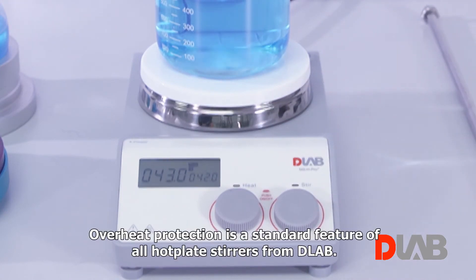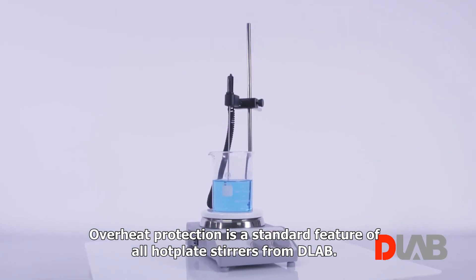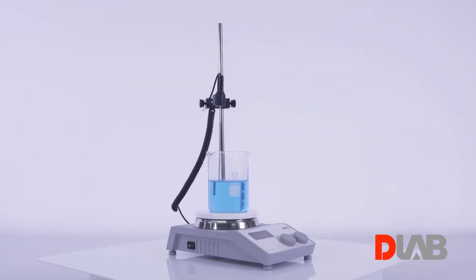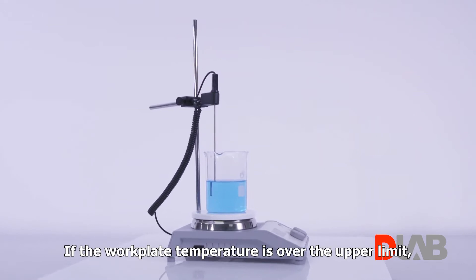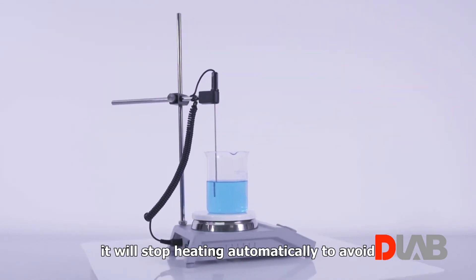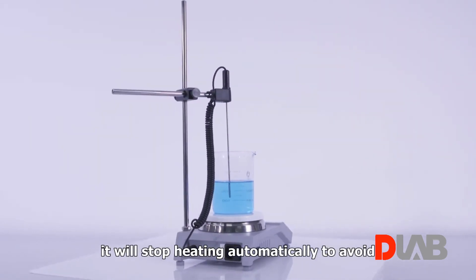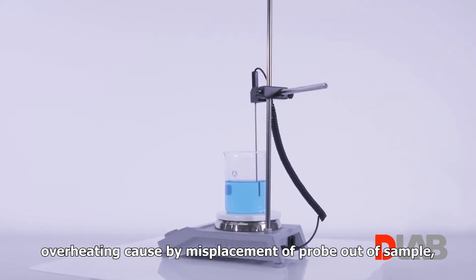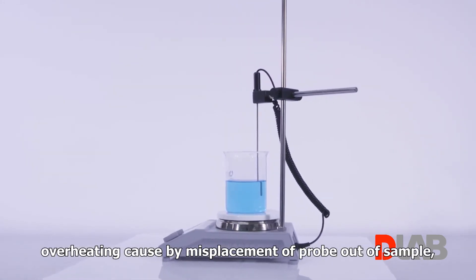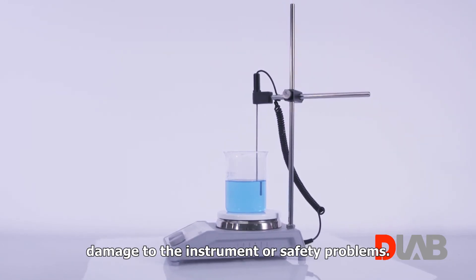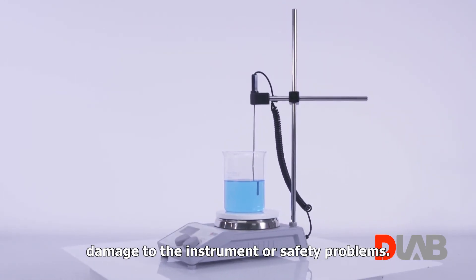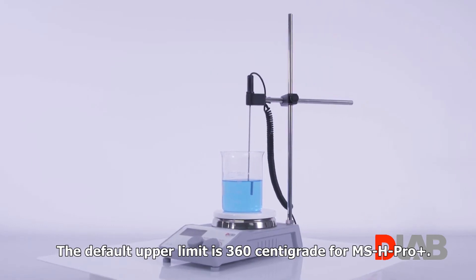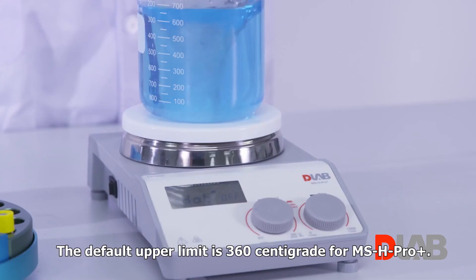Overheat protection. Overheat protection is the standard feature of all hot plate stirrers from D-Lab. If the work plate temperature is over the upper limit, it will stop heating automatically to avoid overheating caused by misplacement of probe out of sample, damage to the instrument, or safety problems. The default upper limit is 360 centigrade for MSH Pro Plus.